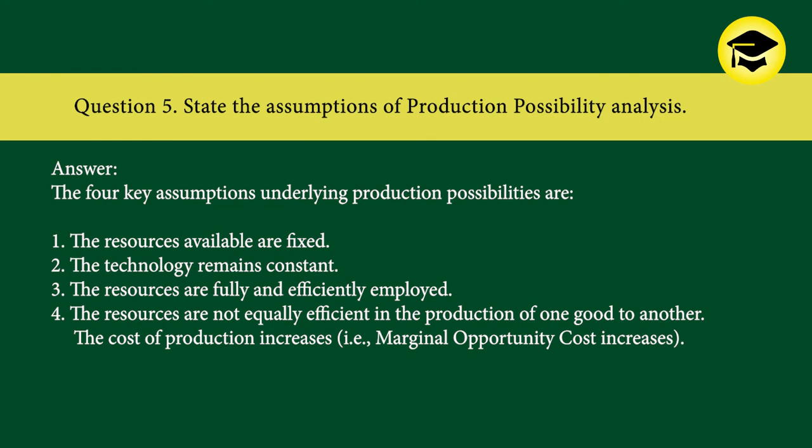This type of economy exists in the USA, Japan, Australia, and other countries. Question 5: State the assumptions of production possibility analysis. Answer: The four key assumptions are — one, resources available are fixed; two, technology remains constant; three, resources are fully and efficiently employed; four, resources are not equally efficient in producing one good versus another, so the cost of production increases, i.e., marginal opportunity cost increases.